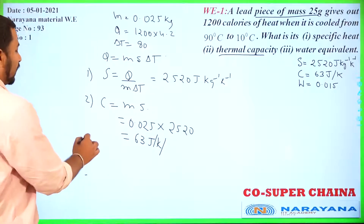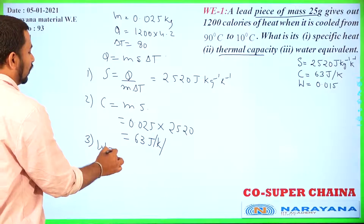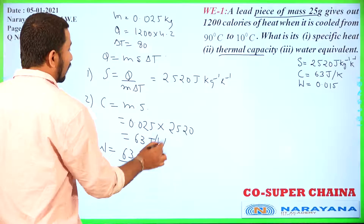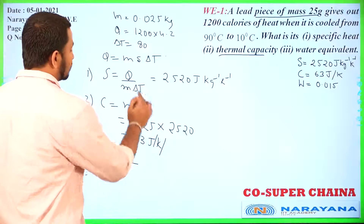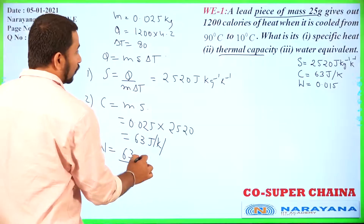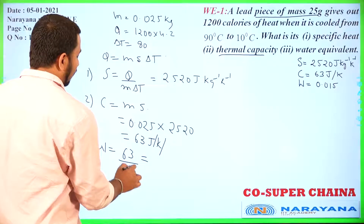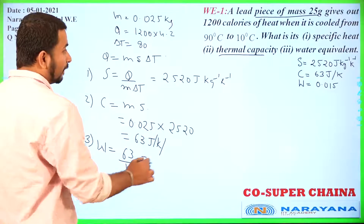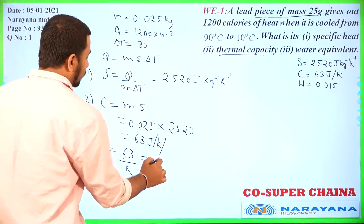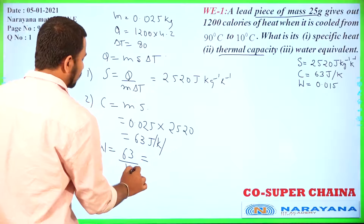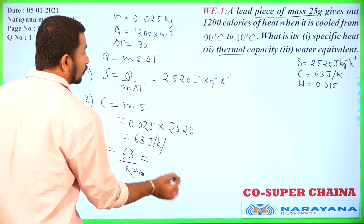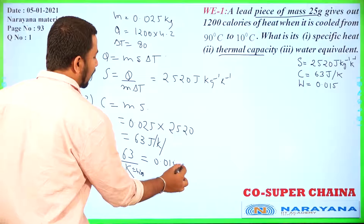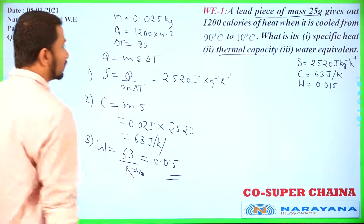Third, we have to find water equivalent W. W equals 63 divided by the water equivalent value 4200. This value will come to 0.015, and that will be the answer of this question.